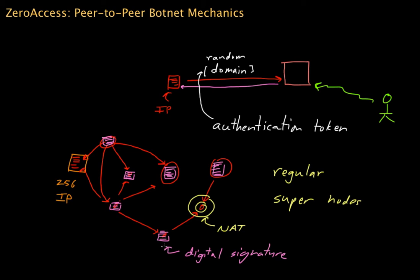The encryption between peers in this network uses RC4, a well-known encryption algorithm. Interestingly, the key used is a universal key — every peer has the same copy — so it's not difficult to reverse. Since everyone has the same key, it's easy to find and figure out the communications, but the traffic is still encrypted at the outset using this key. That covers how Zero Access works from a peer-to-peer botnet perspective, and hopefully this series has given you a solid grasp of how Zero Access works in general.